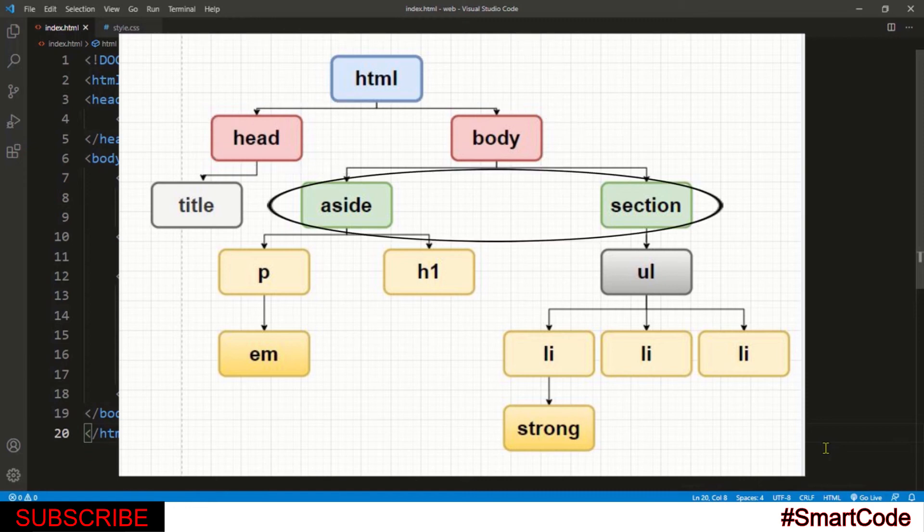Similarly, the aside and the section are siblings as body is their common parent. The h1 and p tag inside the aside are siblings and the three li inside the ul are siblings.